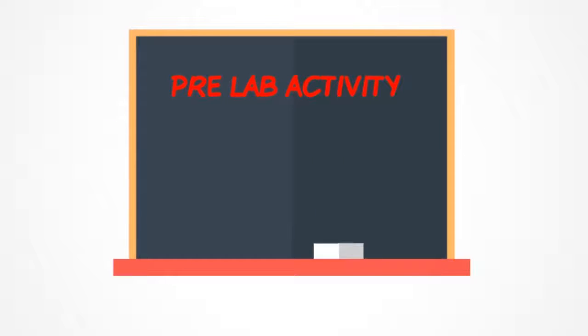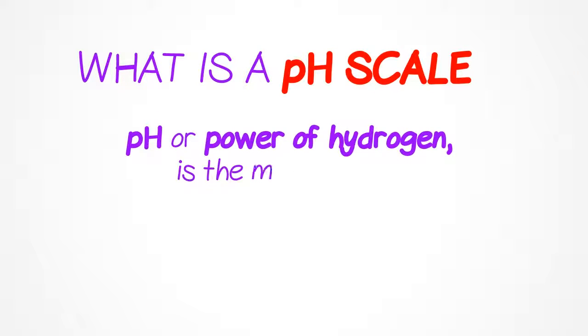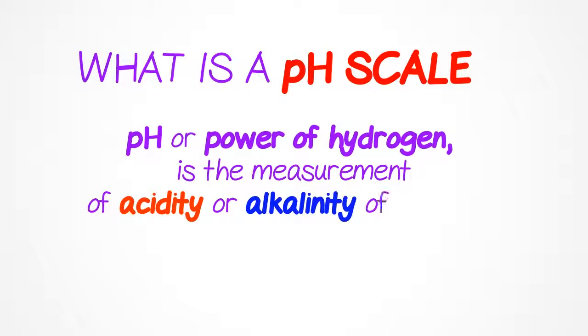Okay scientists, let's move on to the pre-lab activity, reading a pH scale. pH, or power of hydrogen, is the measurement of acidity or alkalinity of a solution.